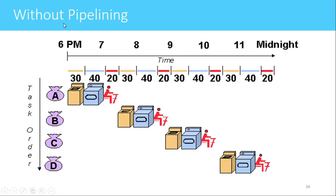In this example the concept is illustrated without pipelining. The laundry man has four customers: A, B, C, and D. Customer A's clothes are first washed, then dried, then ironed. After that, customer B's clothes are washed, dried, and ironed, and so on. Since pipelining is not implemented, the time required for washing the clothes of all four customers takes a long time.